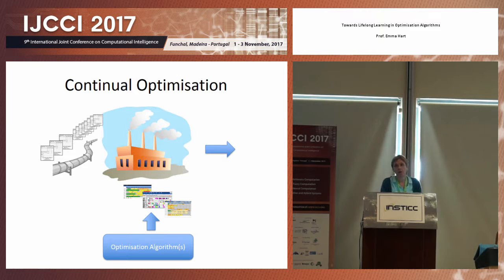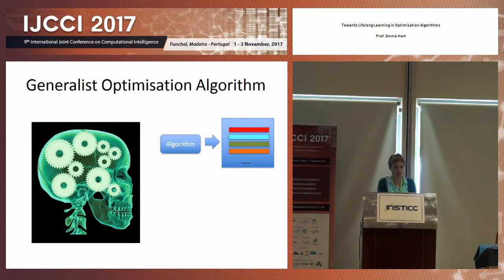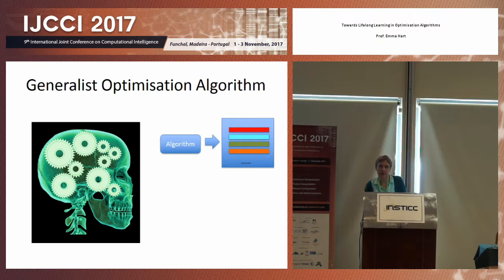If you look in the optimization literature, there are lots of different types of optimization — from exact methods, heuristics, meta-heuristics, hyper-heuristics, many different kinds of approaches. I'm going to generalize a little bit and say they fall into two main types of algorithm.